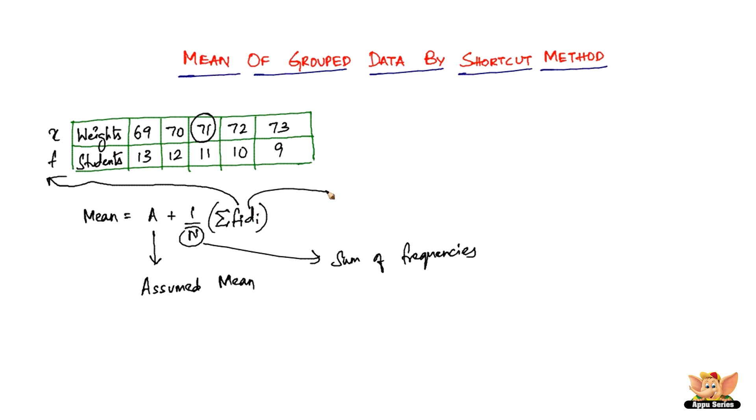What is DI? DI is nothing but the deviation of the original values from the assumed mean A. We've assumed this mean to be 71, so how much does 69 deviate from it?